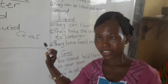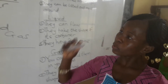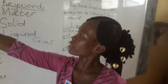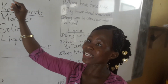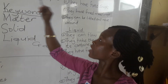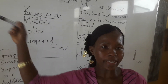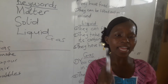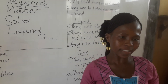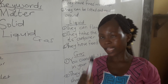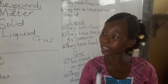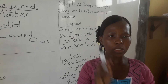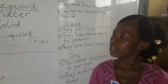But today we are concerned with identifying and classifying solid, liquid, and gas. Don't forget: matter is anything that has mass, weight, and can occupy space. And there are three states of matter — solid, liquid, and gas.